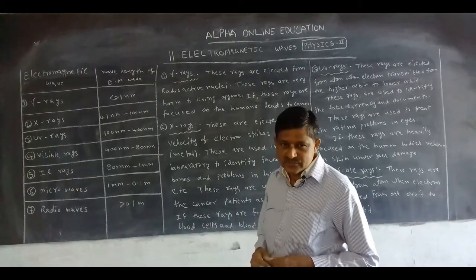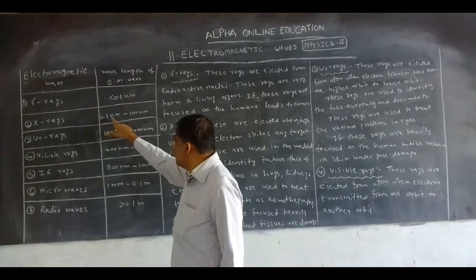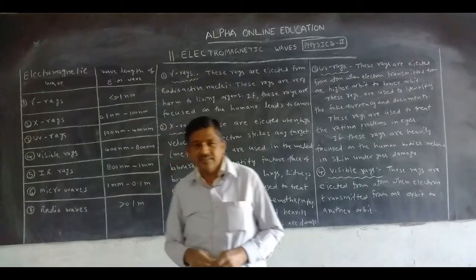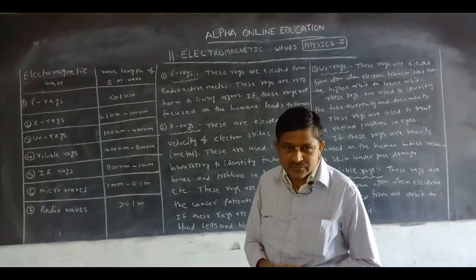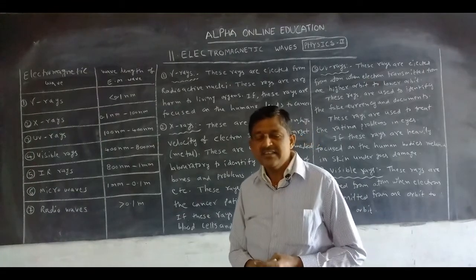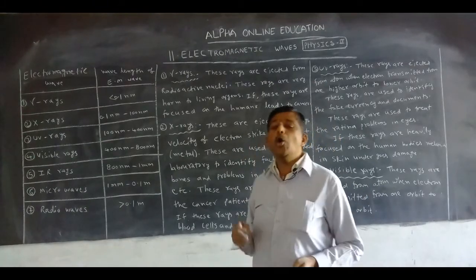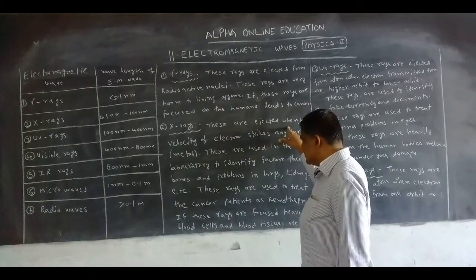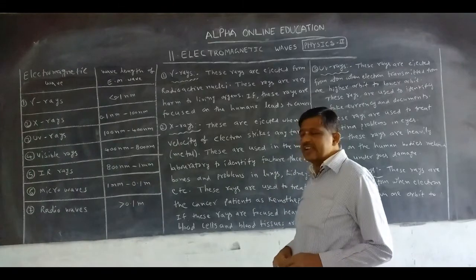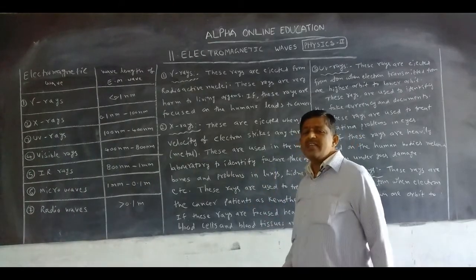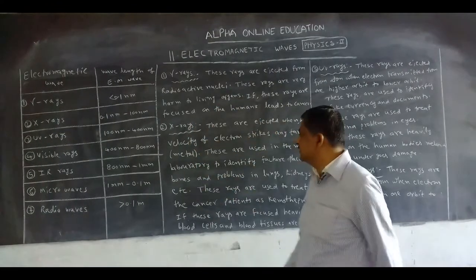Next is X-rays. The wavelength of X-rays is 0.1 nanometers to 100 nanometers. X-rays were discovered by scientist Röntgen. X-rays are ejected when high-velocity electrons strike a metal target.